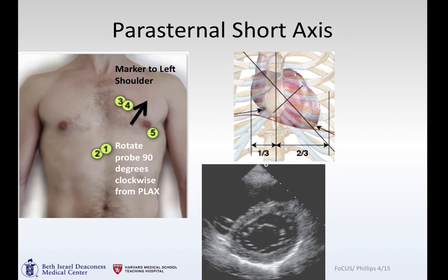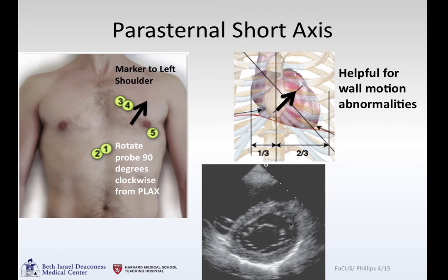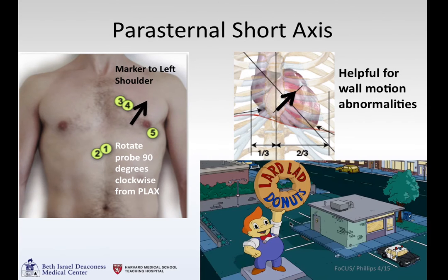Rotating the probe from the parasternal long axis 90 degrees clockwise — so instead of the marker pointing off to the right shoulder, the marker is now off to the left — you're along the short axis of the heart, and you can get a view of the heart as a donut. This is helpful with wall motion abnormalities; I like to call it the donut view.